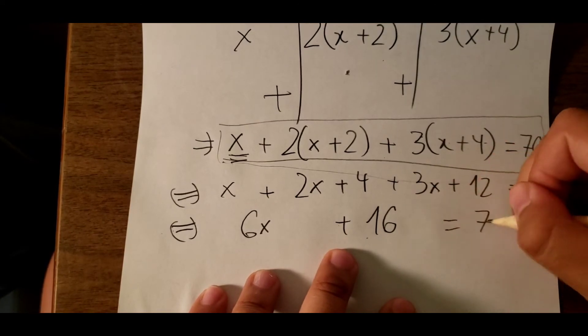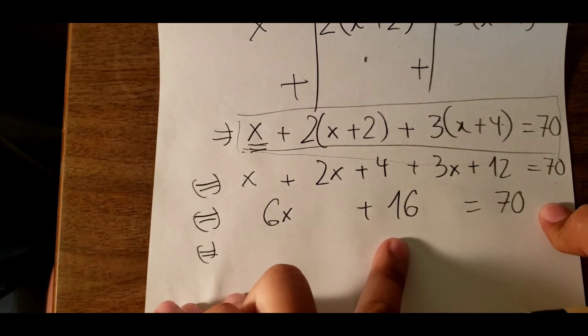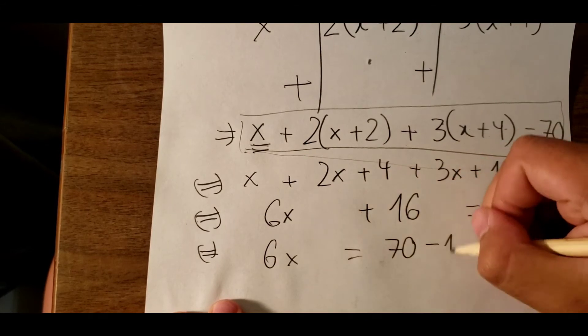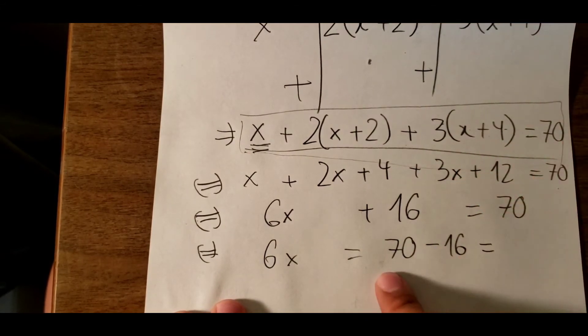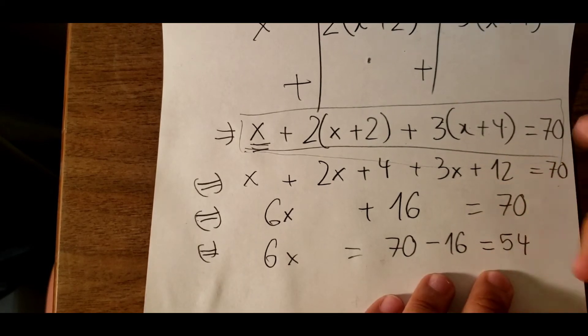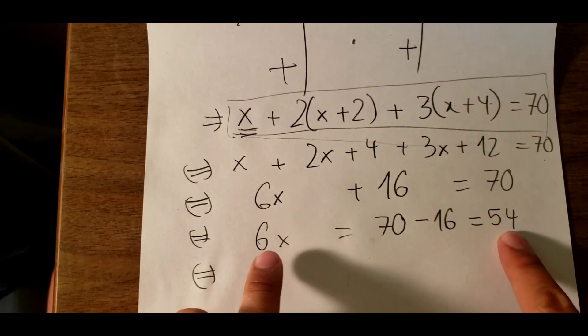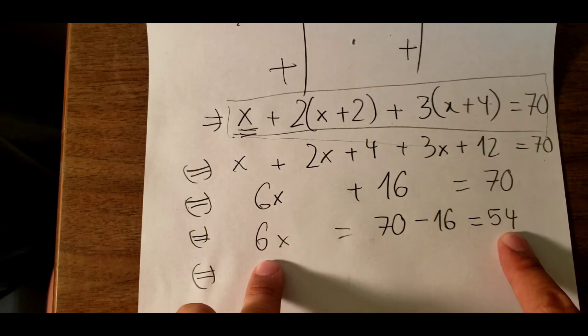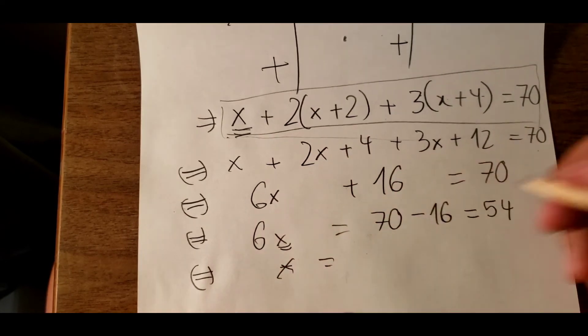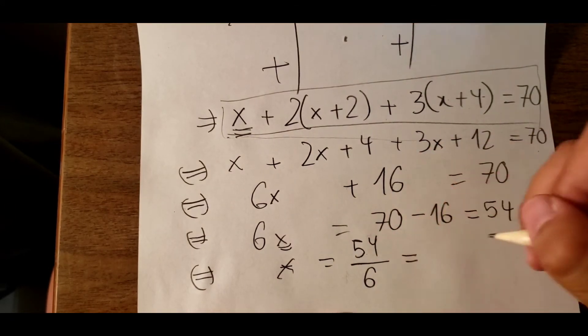And we have 16 going to 70, which is about 70 minus 16. 70 minus 16 equals 54. To calculate x, we need to divide by 6, so we have x equals 9.